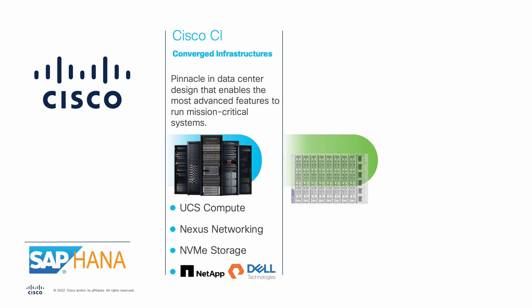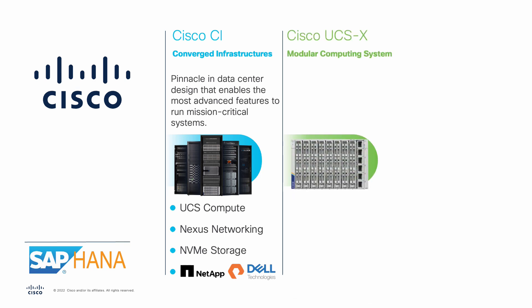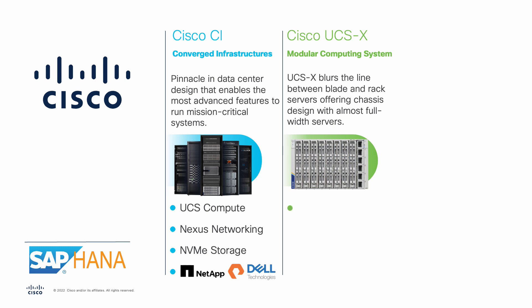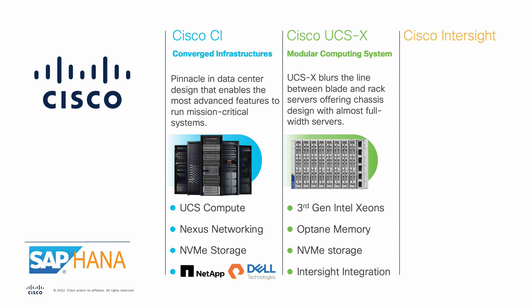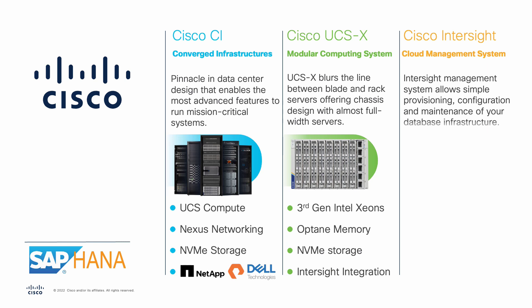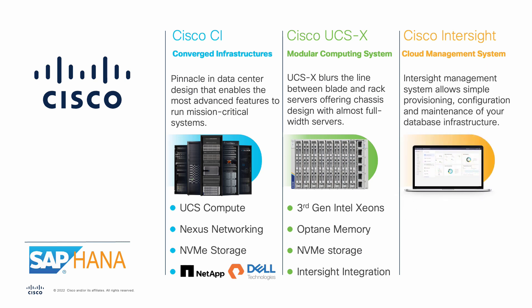At the core of the solution is the Cisco UCSX modular computing system that is natively configured and managed through the Intersight cloud. Cisco UCSX blurs the line between blade and rack servers, offering a chassis design with almost full-width vertically mounted servers running the latest third-generation Xeon scalable CPUs that also provide the capability to use Optane persistent memory modules, which provide a hybrid between the speed of classical volatile memory and the reliability of NVMe storage. Cisco UCSX and the entire Cisco CI solution stack is combined by the Cisco Intersight management system that allows simple provisioning, configuration, and maintenance of all the Cisco converged system components in your database infrastructure.